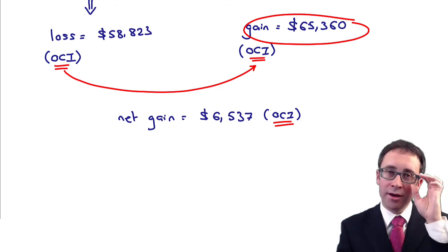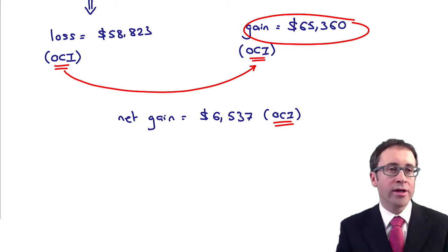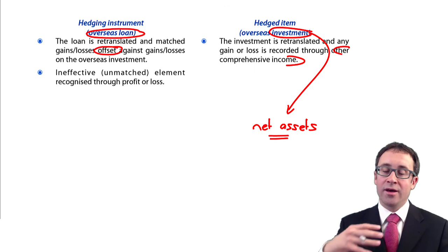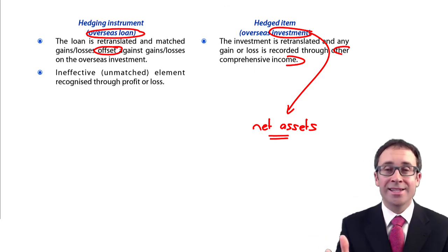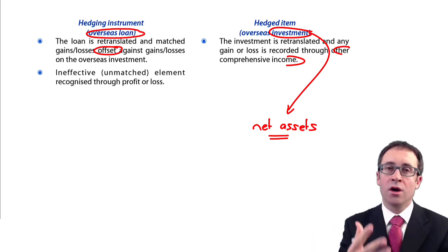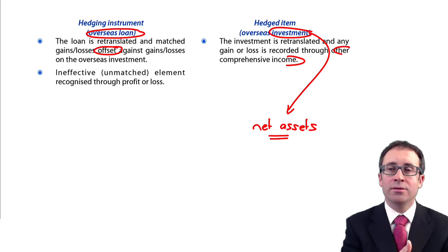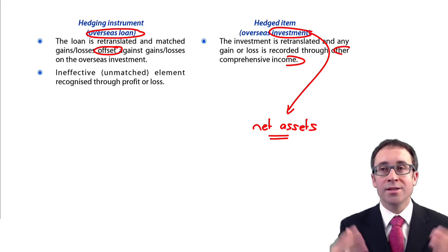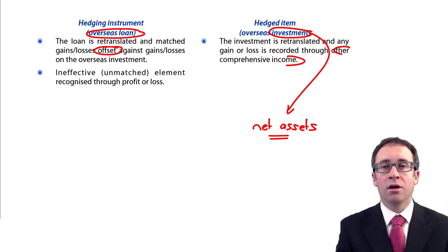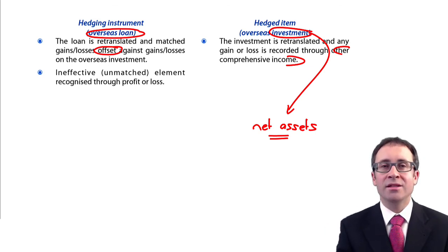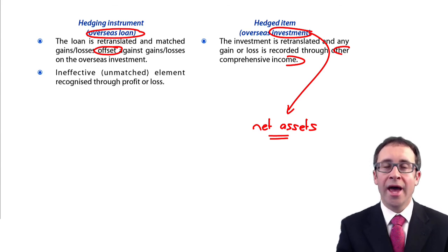In terms of hedging a net investment in a foreign operation, that's pretty much all you need to do and look at. The key point is that the item is the net assets — you translate at the closing rate and gains and losses go to OCI. On the instrument, the overseas loan, that's where we change the accounting treatment: instead of taking gains and losses to profit or loss, we take them to OCI to match up against the gains and losses on translation of the overseas net assets. In the next video we'll look at the ineffective element. But for now, that's it on our hedge accounting treatments.